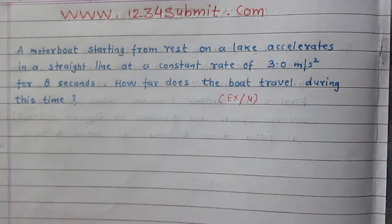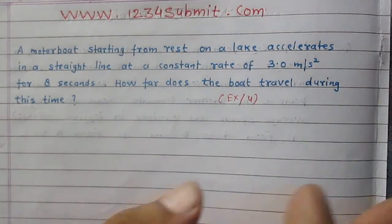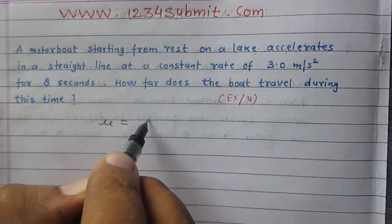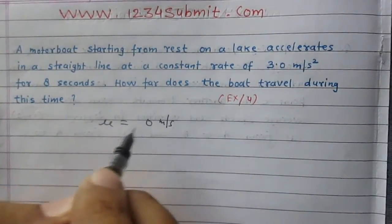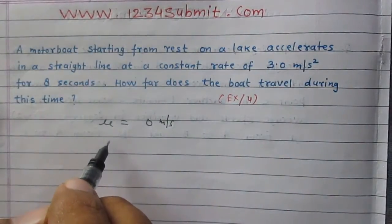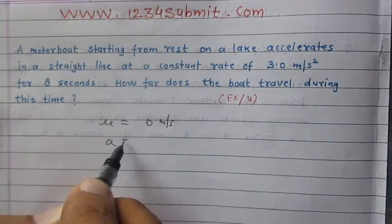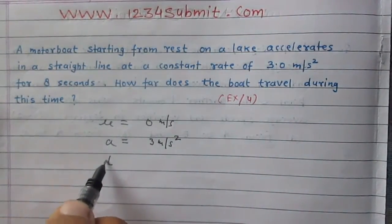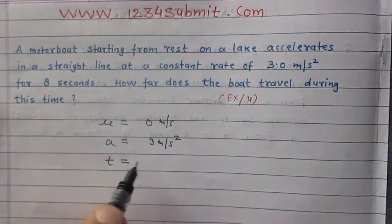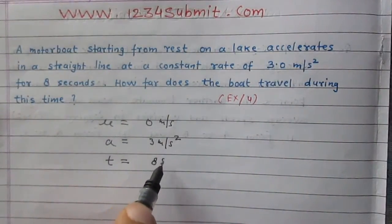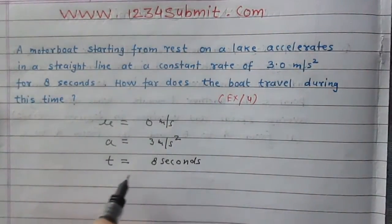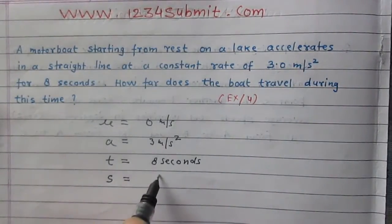We are given that the motorboat is starting from rest, so initial speed u is 0 meter per second. Acceleration is 3 meter per second square. Time taken is 8 seconds, and we are to find displacement of the motorboat in 8 seconds.